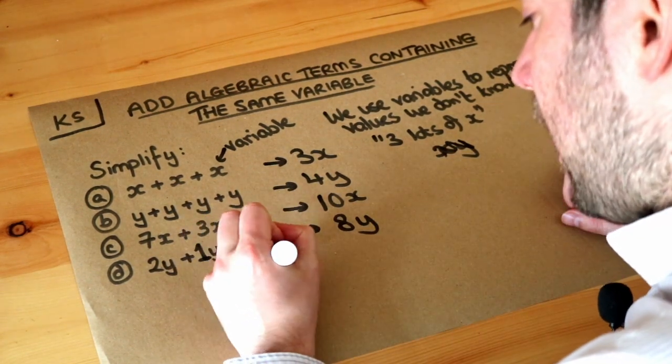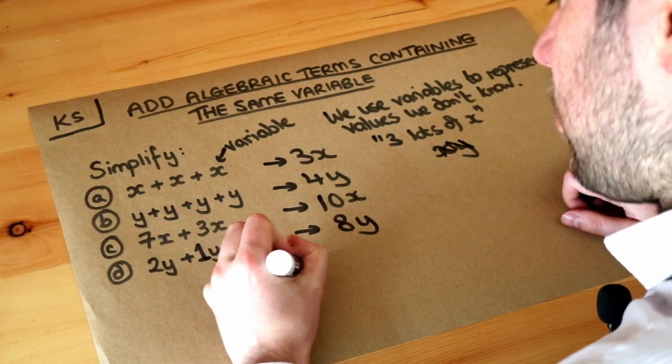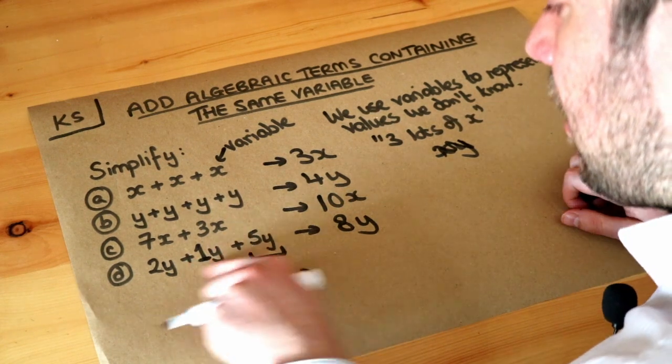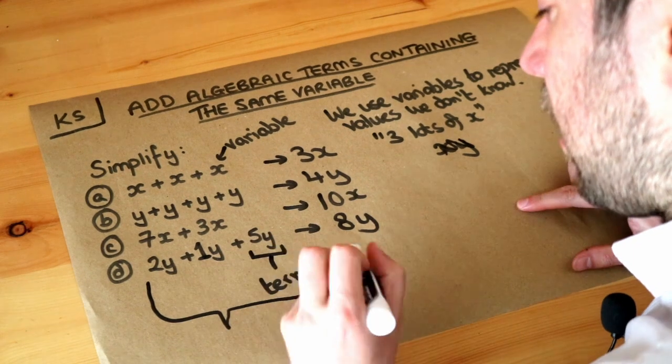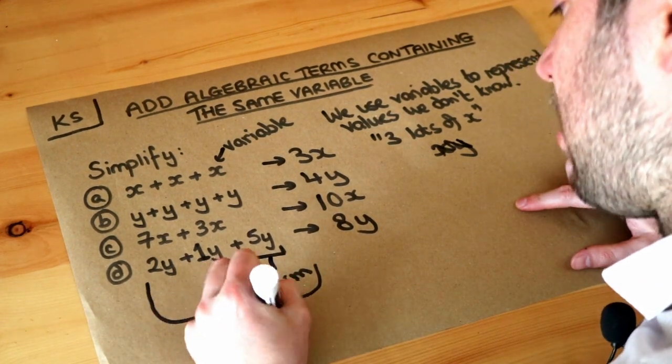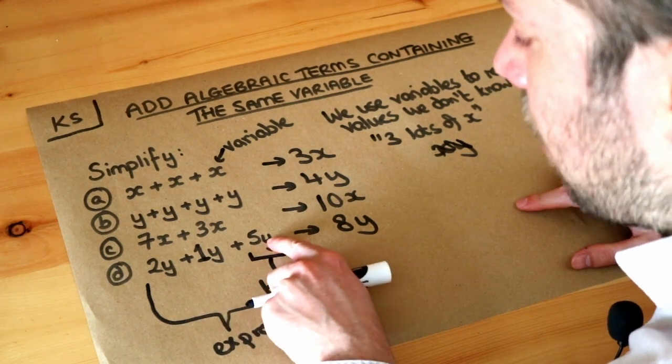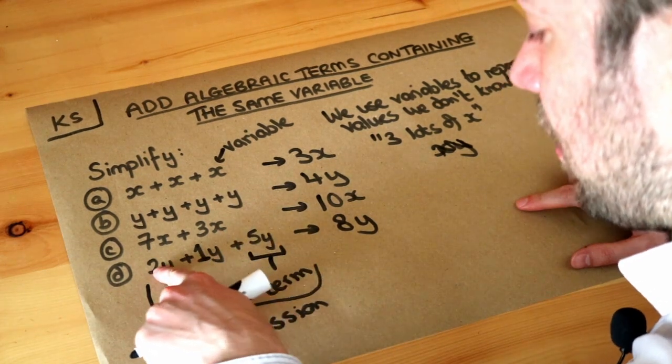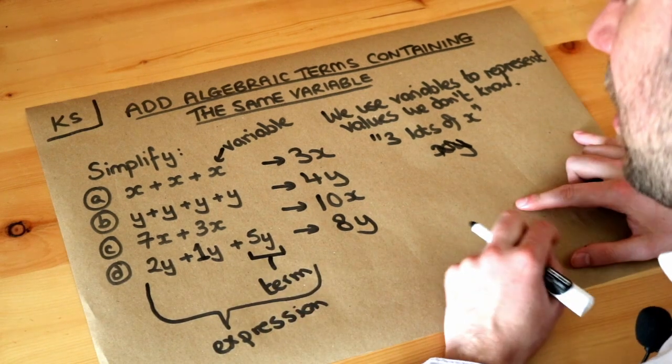And one of these things on its own by the way in this addition is known as a term. So a term is just one of the things being added in this algebraic expression. And the whole thing overall, to get the right terminology, is known as an expression. So an expression is just a collection of terms. Each term is an individual thing without the pluses or minuses within it. So this is a term, this is a term, this is a term. And then if you have a collection of terms that's known as an expression.